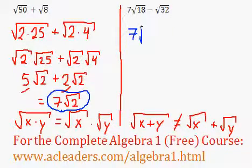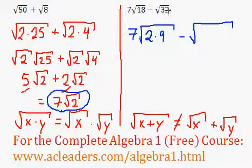Over here, we have 7 root 18. Root 18 can be rewritten as root 2 times 9. And root 32, I can simplify that into 2 times 16.